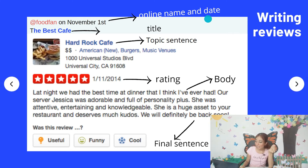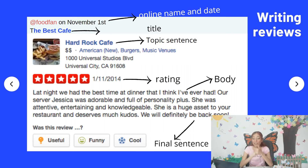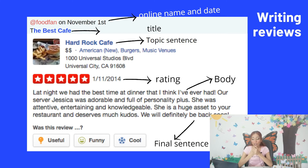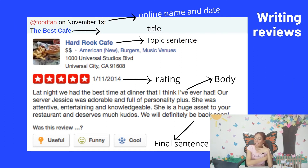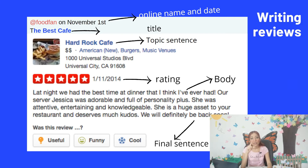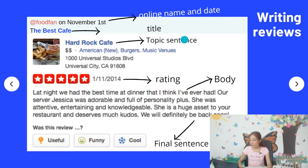Now let's pay attention to the structure. First we have the online name and the date — the online name is 'Food Fan' and the day is November 1st. Then 'The Best Cafe' is the title. 'Hard Rock Cafe' may be the topic sentence — sometimes the topic sentence is in the body. Pay attention because most reviews are different; they may not be in the same order or structure, but they have the same parts. You can count: one, two, three, four, five, and six — you need to have these six parts. Then we have the rating: five stars, meaning it's an excellent restaurant.